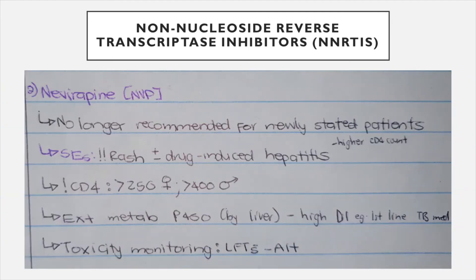Nevirapine (NVP) is no longer recommended for newly started patients because it causes a rash and drug-induced hepatitis. It is also metabolized by the liver, so it has significant drug interactions with TB medications that are hepatotoxic. If a patient has both TB and HIV, be especially aware of this combination. As a result, when giving medications, you need to look at the whole history and what medications the patient is on, because drug interactions can be very dangerous.